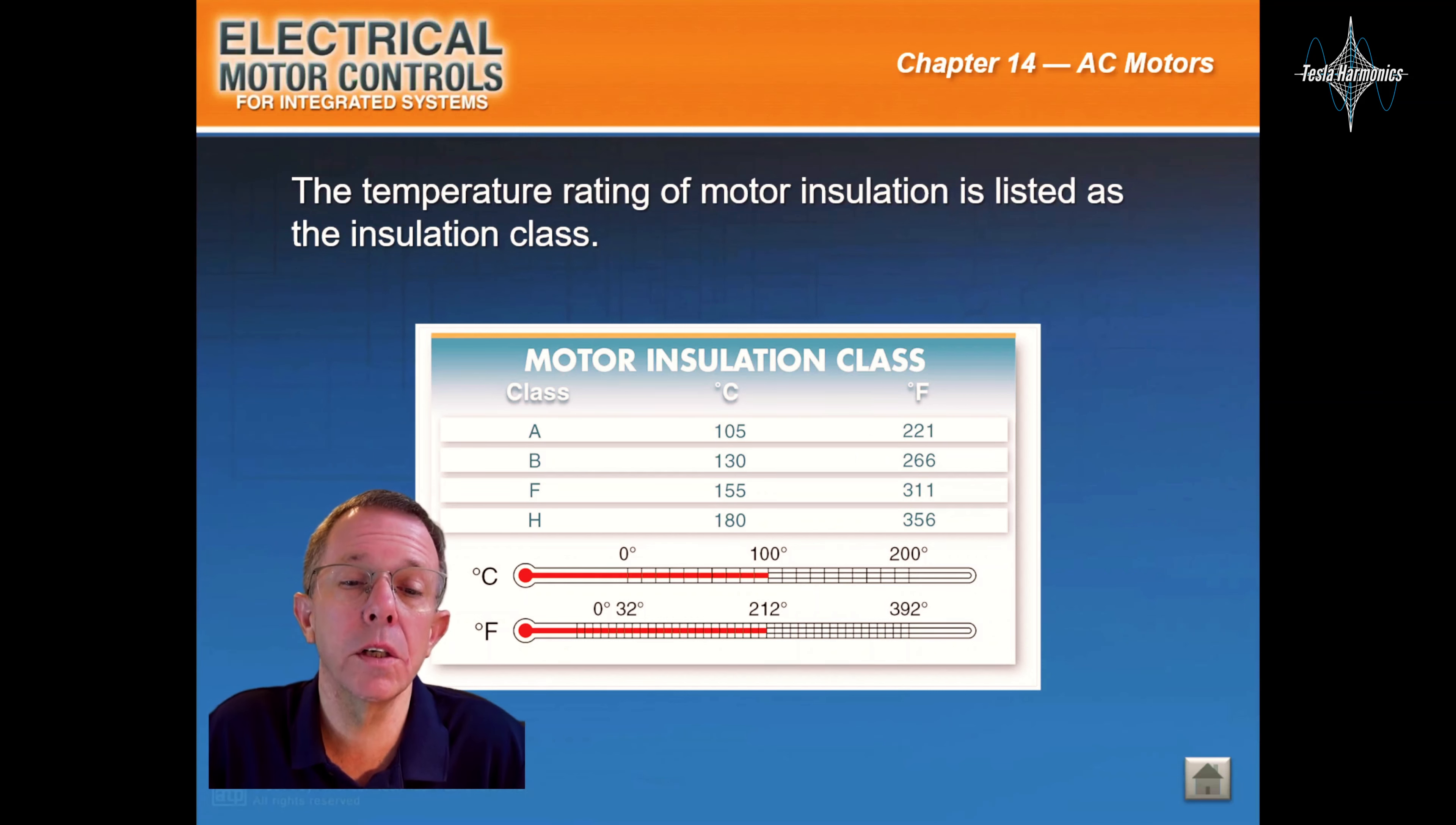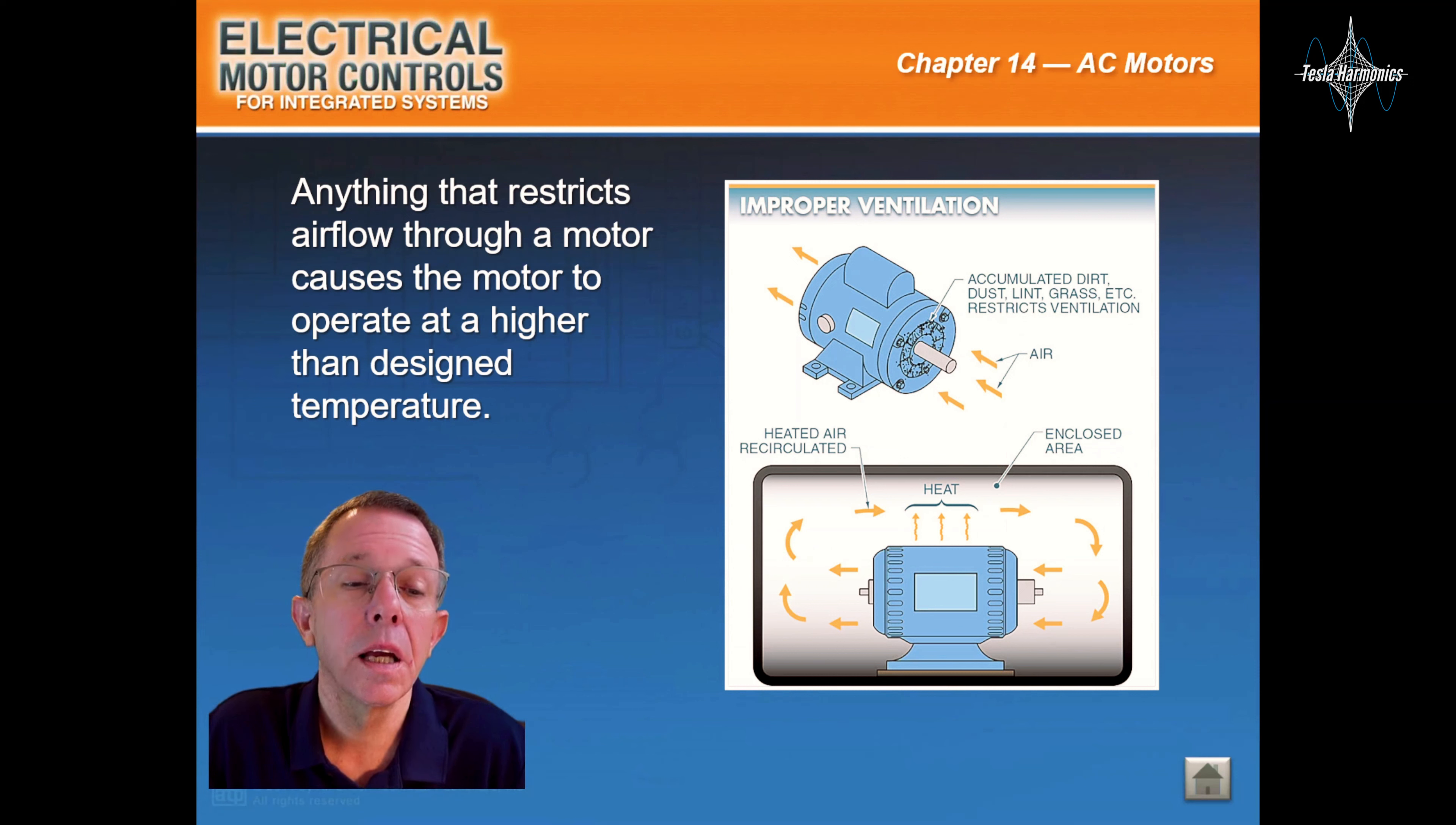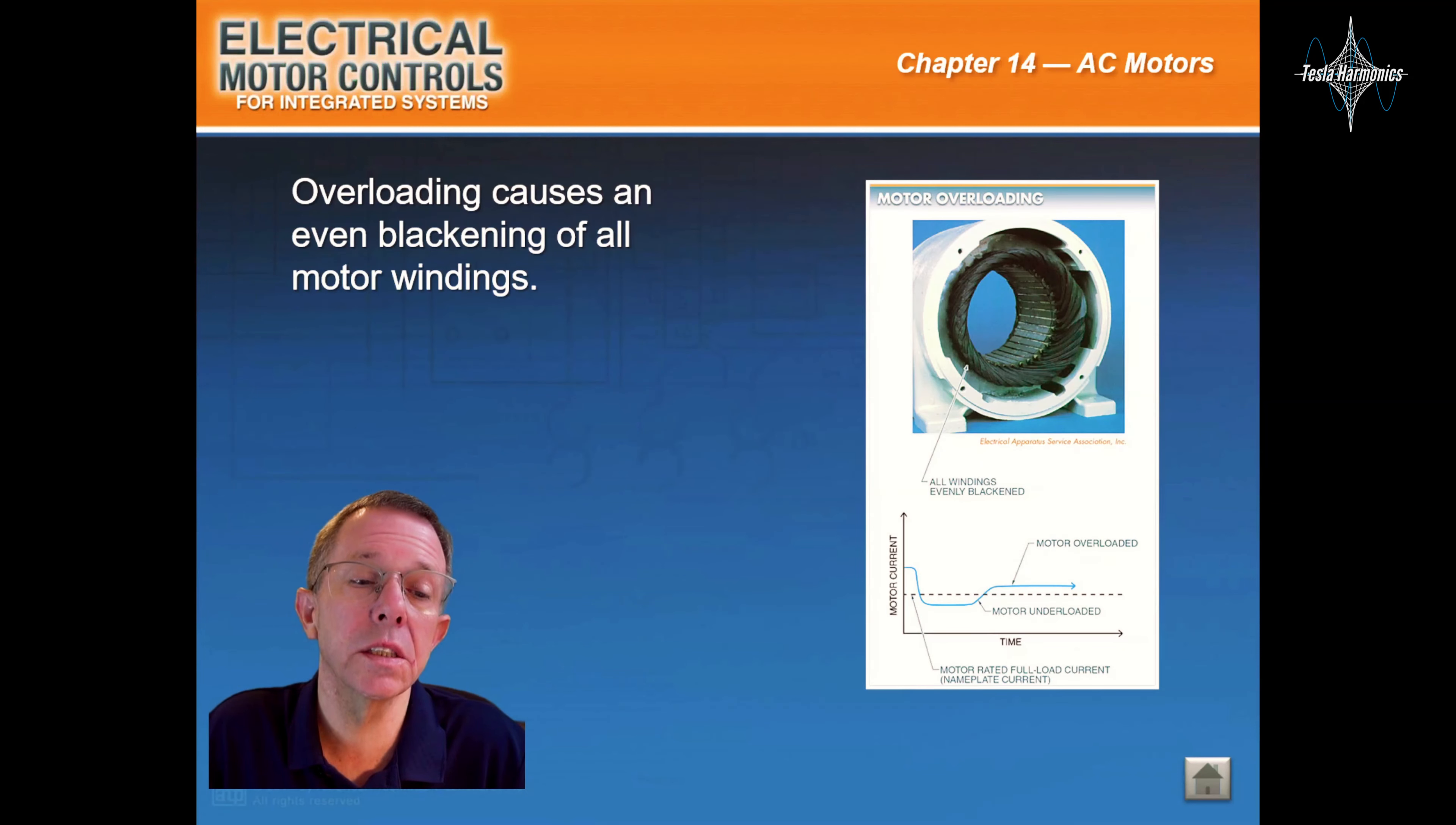The temperature rating of the motor insulation is listed as the insulation class. Anything that restricts airflow through a motor causes the motor to operate at a higher than designed temperature. Overloading causes an even blackening of all motor windings.